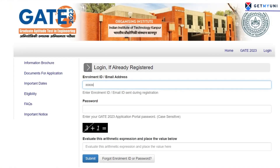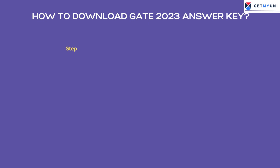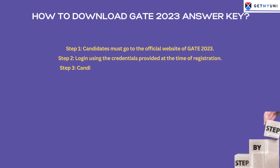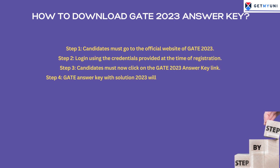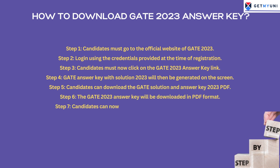Candidates must now click on the GATE 2023 answer key link that will be shown on the screen once you log in. The GATE answer key with solutions 2023 will then be generated on the screen for all subjects, and you can download them and tally with the answers that you had written in the examination.